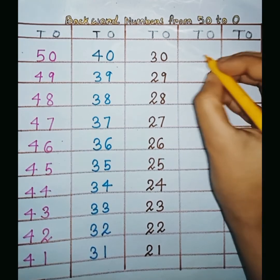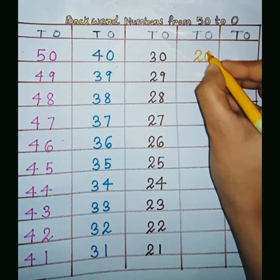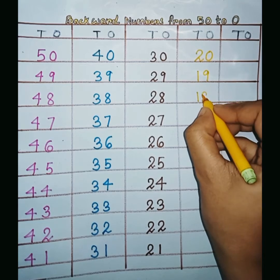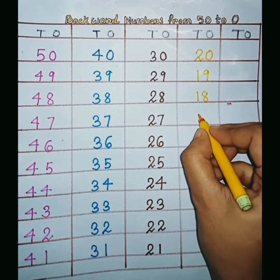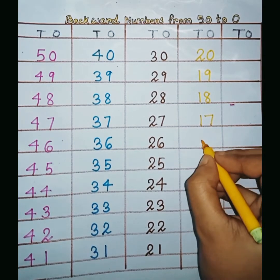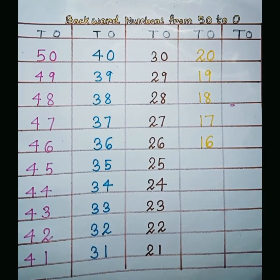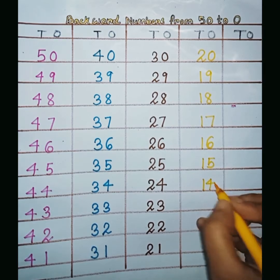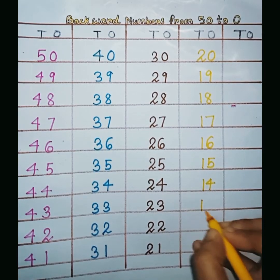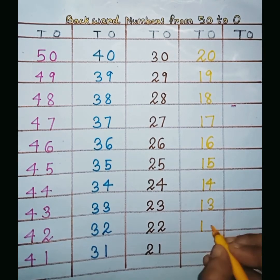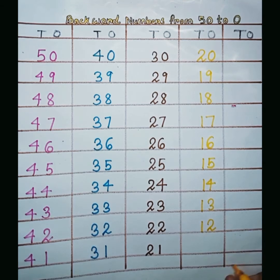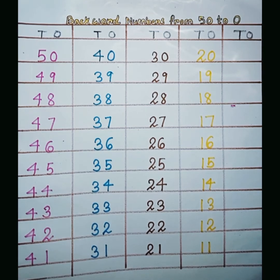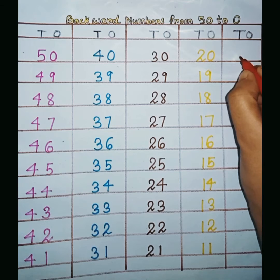we write 20. 20, 1, 9, 19. 1, 8, 18. 1, 7, 17. 1, 6, 16. 1, 5, 15. 1, 4, 14. 1, 3, 13. 1, 2, 12. 1, 1, 11.